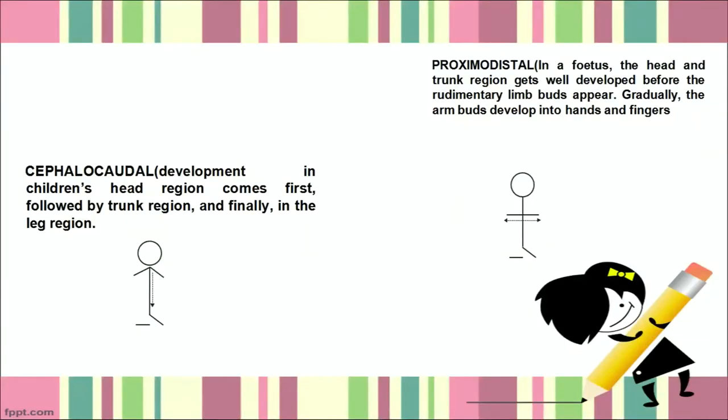Cephalocaudal means head to tail — development in the head region comes first, followed by the trunk region, followed by the leg region. That pattern is followed across all children. Proximodistal means near to far, referring to the core of the body. That is the reason the head and trunk region develop first, then rudimentary limb buds emerge in a fetus, followed by hands and fingers. Consequently, a child acquires gross motor skills first — requiring movement of arms and hands — and fine motor skills requiring finger dexterity, such as holding a pen or pencil, come later.